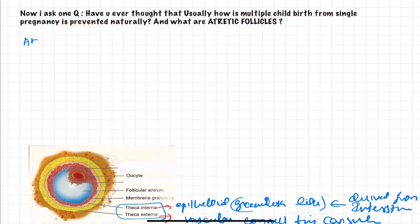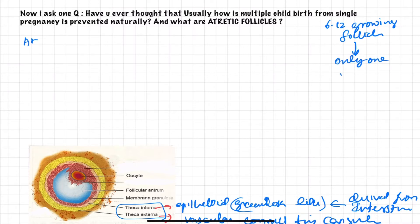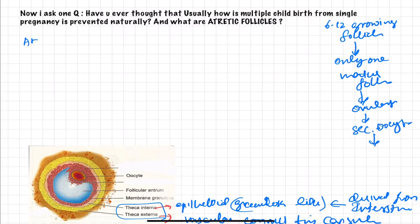What are atretic follicles? As we go into the concept, there are nearly six to twelve growing follicles in one cycle. Among these growing follicles, only one will mature to form the mature follicle, and that one gets ovulated to secrete the secondary oocyte.